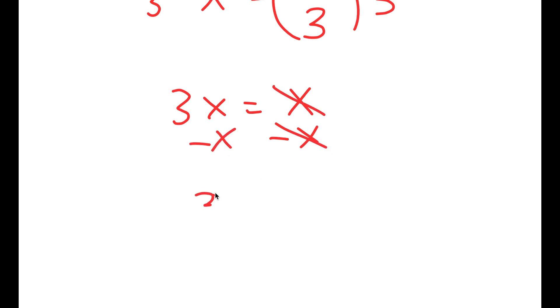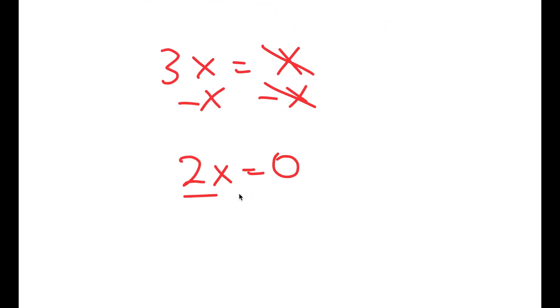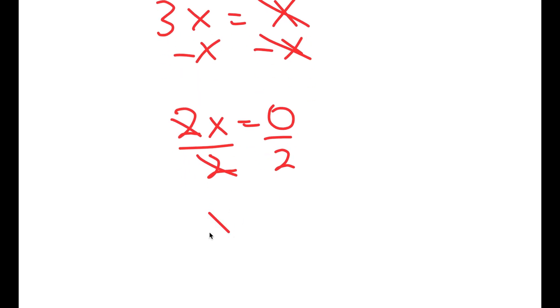So you get 3x minus x, which is 2x, is equal to 0, meaning x is equal to 0 divided by 2, which is 0.